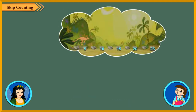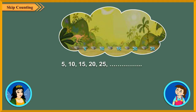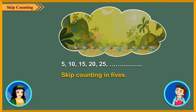Now Sona's brother Johnny has a different pattern of jumping. He jumps on every fifth number. The numbers he jumps on are 5, 10, 15, 20, 25, and so on. This is skip counting in fives.